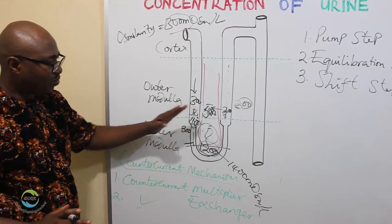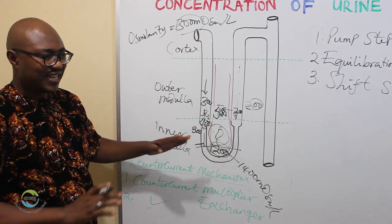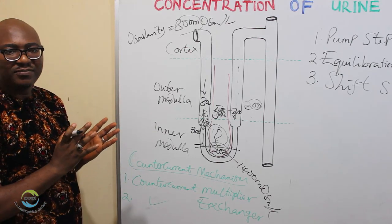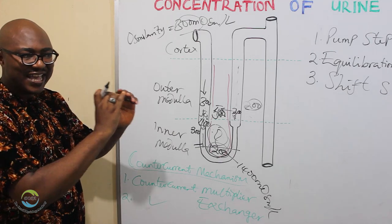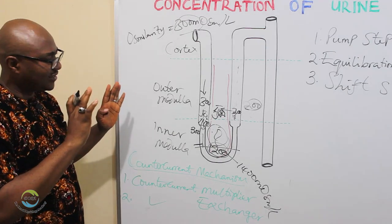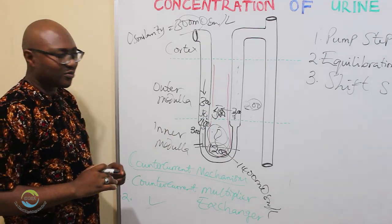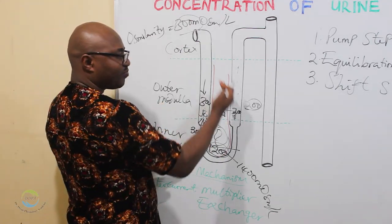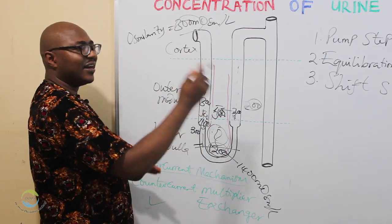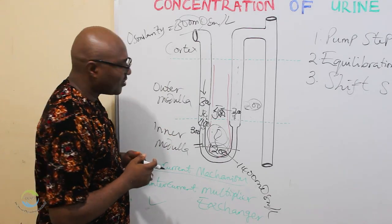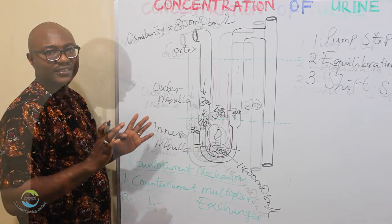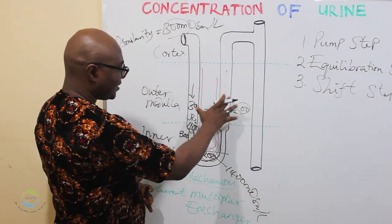As the process repeats over cycles of continuous pumping, equilibration, and flow of new fluid, the interstitium becomes more and more concentrated until at the hairpin bend — the lowest level — it reaches 1,000 to 1,400 milliosmoles per liter. That is the high medullary interstitial osmotic gradient. This is the counter current multiplier: pump step, equilibration step, shift step — rinse and repeat until it becomes very high.